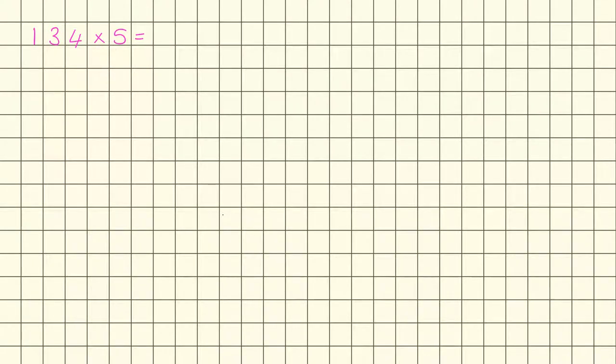Right, so 134 times by 5. Let's do this — 134 times by 5 using the formal written method.